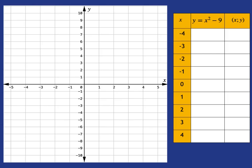When x is negative 4, how do we work out what the y value is? Well, we simply substitute negative 4 into that formula. We'll get negative 4 squared subtract 9. Negative 4 squared is 16. 16 subtract 9 is 7.